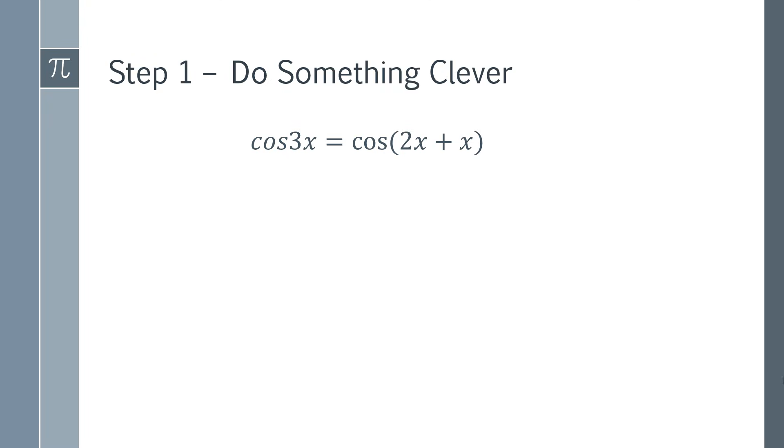This may seem simple, but it allows us to use a very powerful identity. And that identity is that cos A plus B can be written in this form. Now if we let A equal 2x and then B equal x, we can do this substitution. And this simplifies things considerably and helps us head in the direction of the answer.